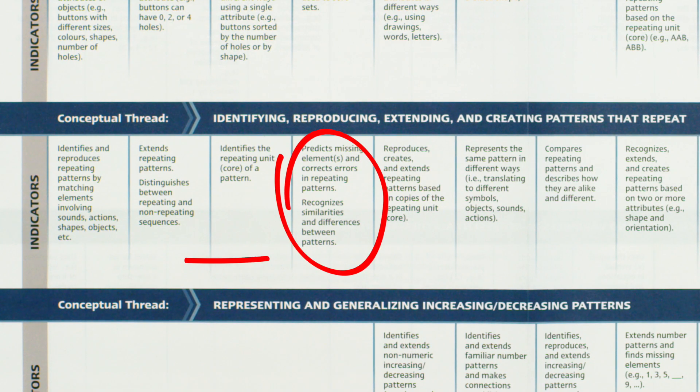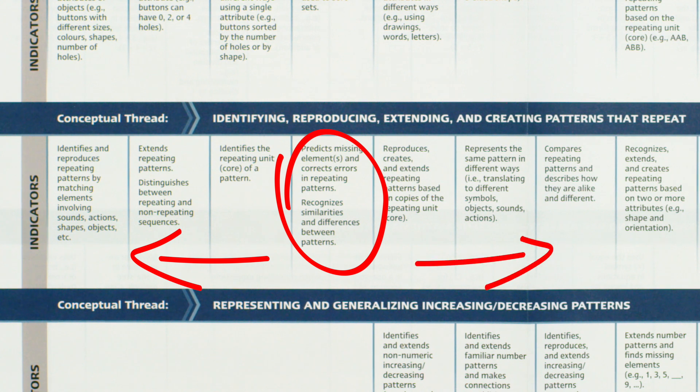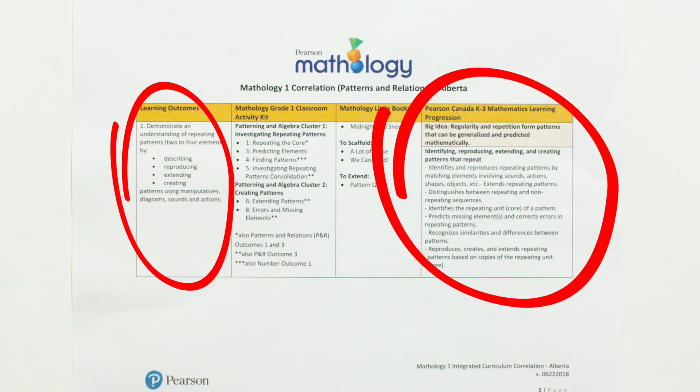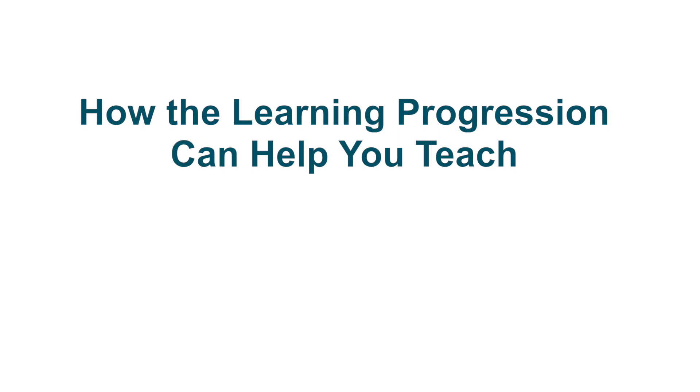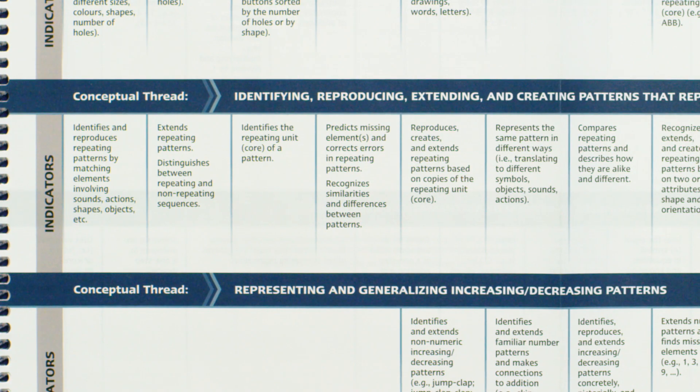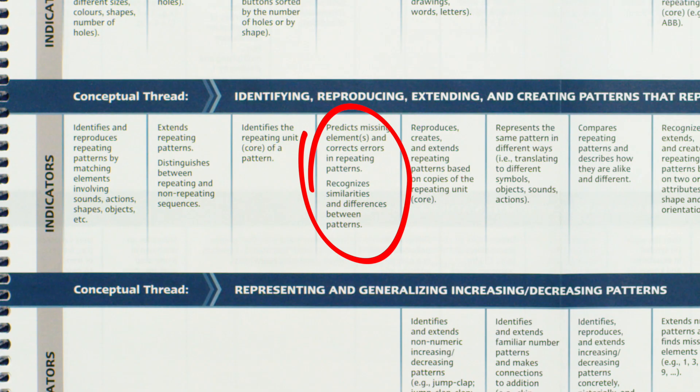You can see what concepts come before that indicator and what comes next. Key information to help understand the intent and extent of your curriculum. Finding an indicator that matches your observations of students' understanding can help you identify where they may be on the progression, their potential learning gaps, what you can do to consolidate learning, and where they are expected to go next.